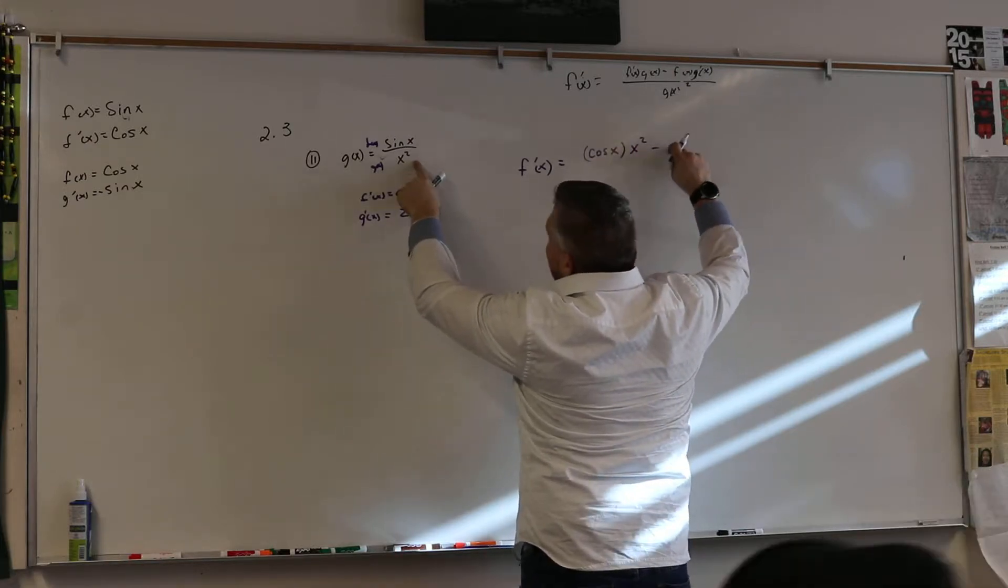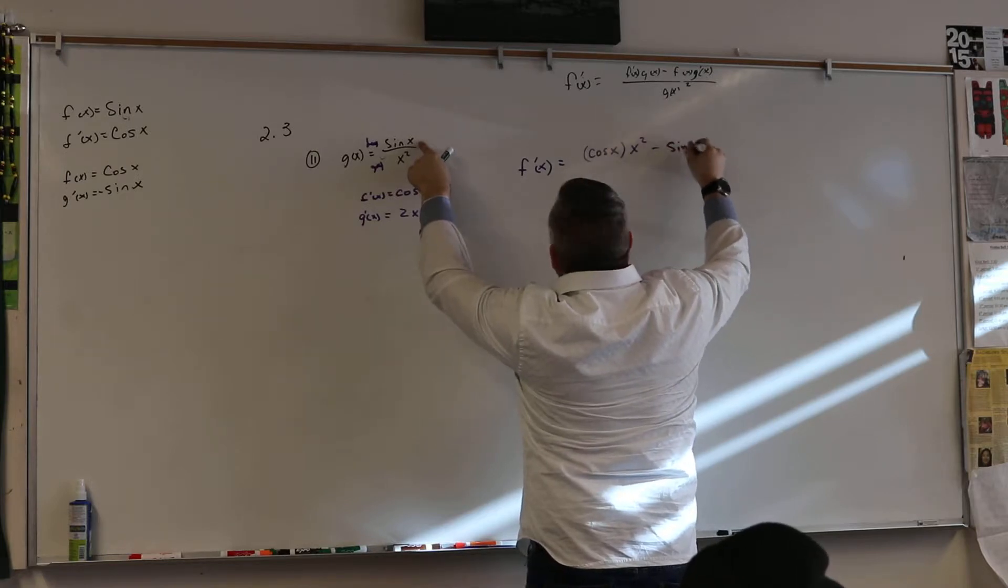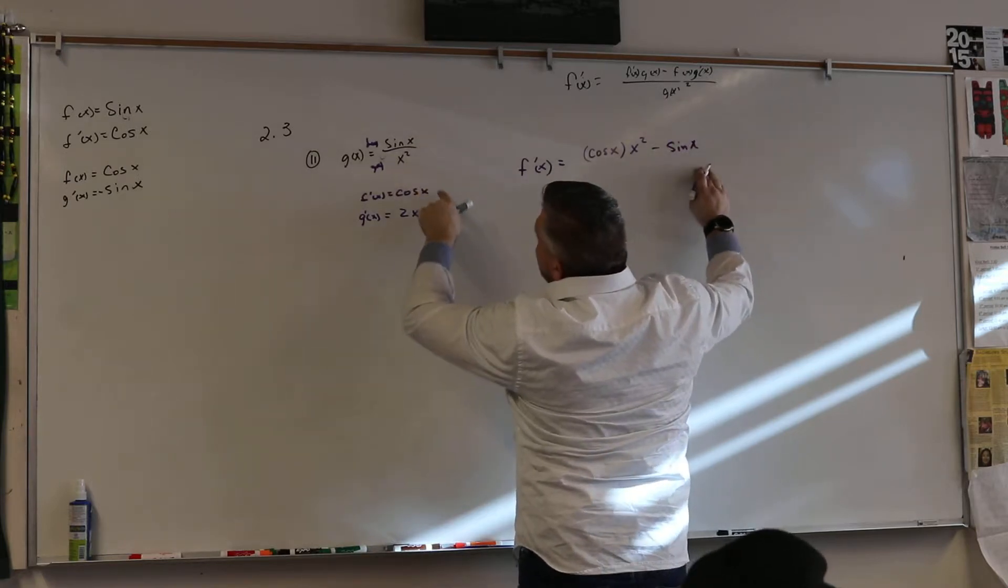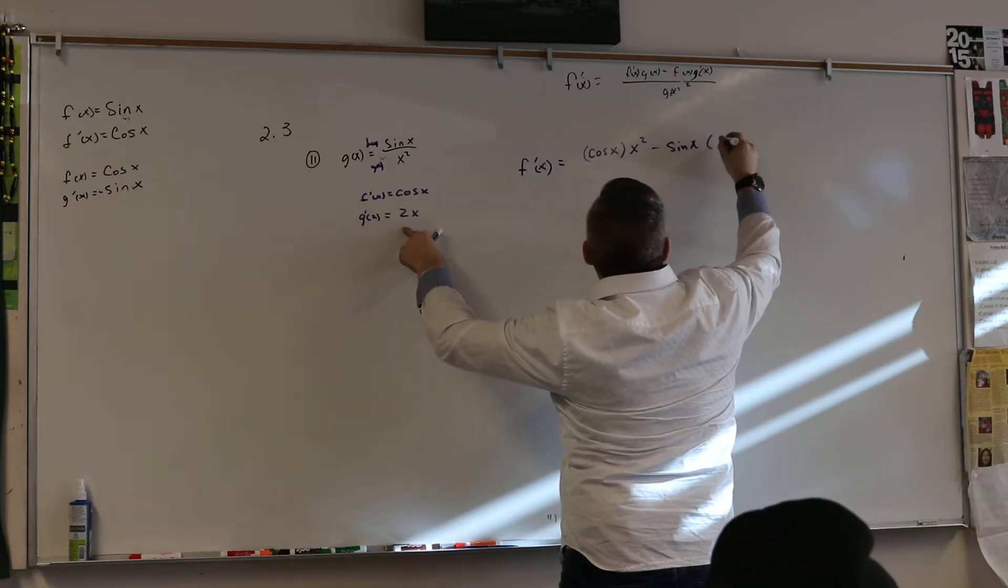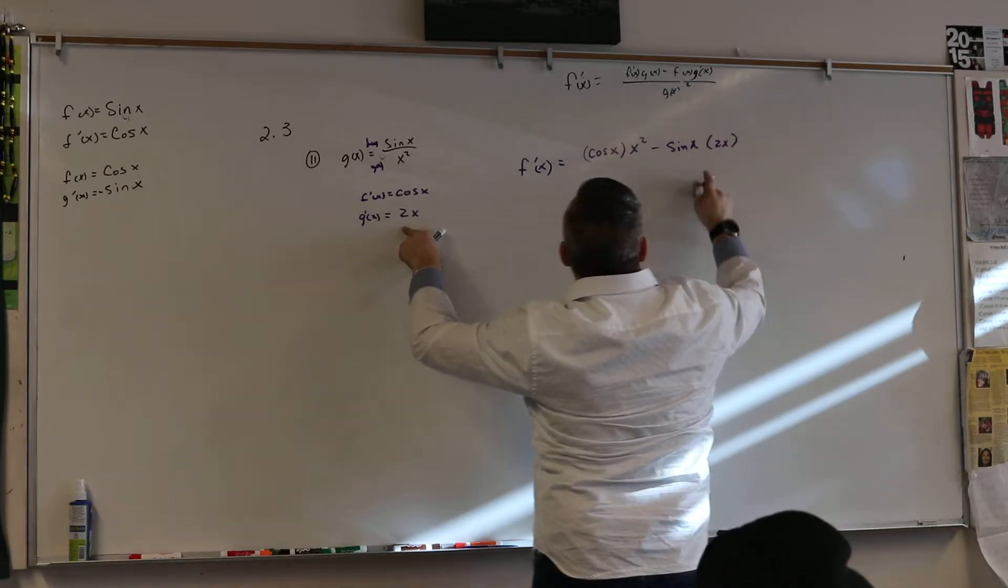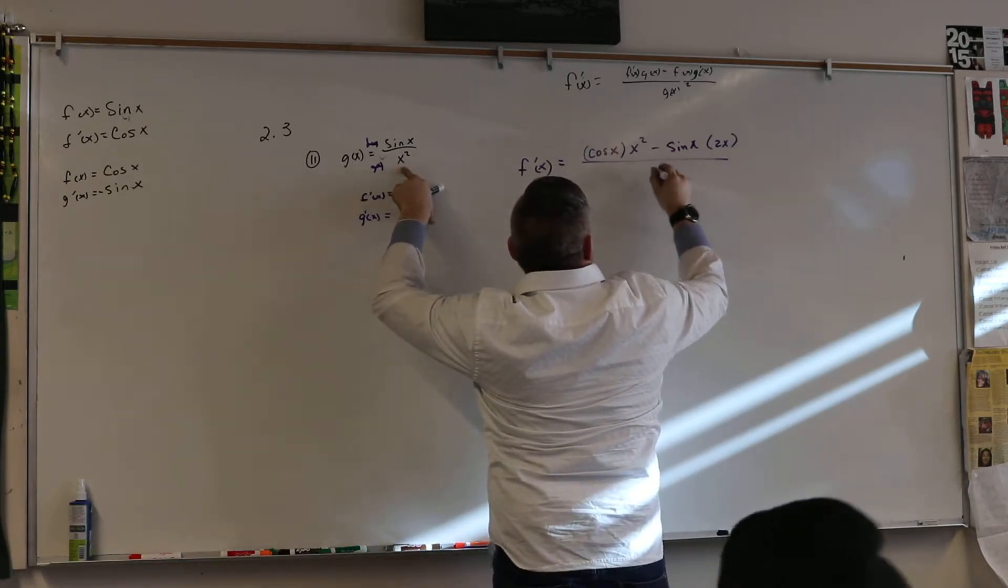Minus f, which is sine of x, times g prime, which is 2x, divided by x squared squared.